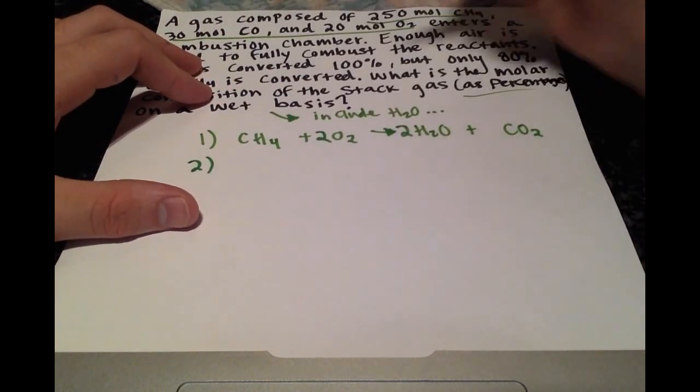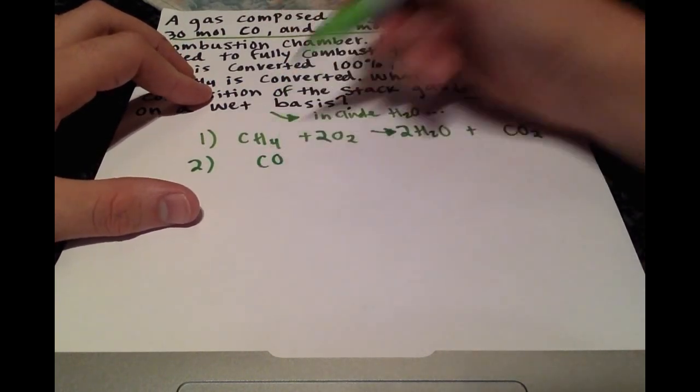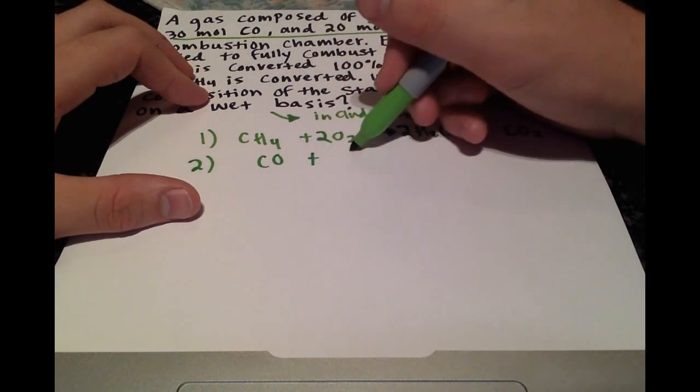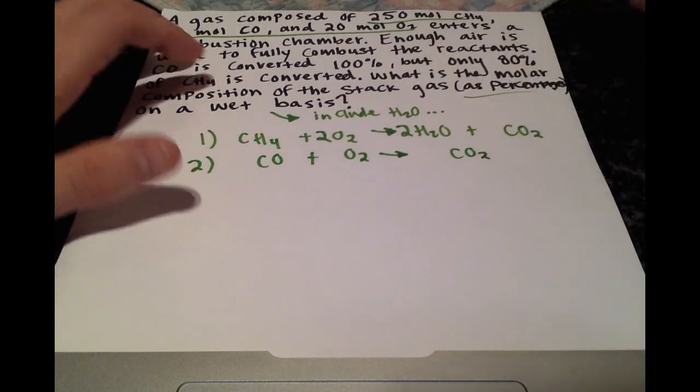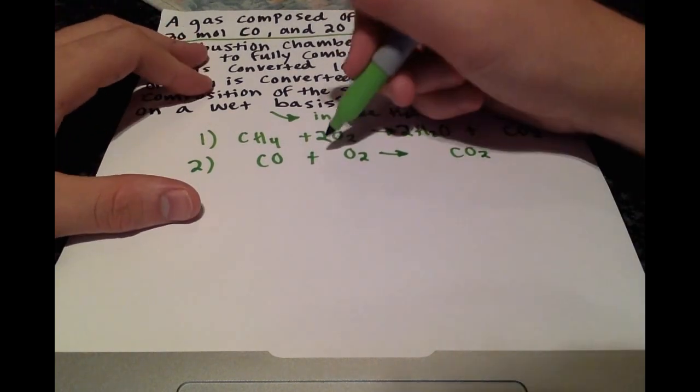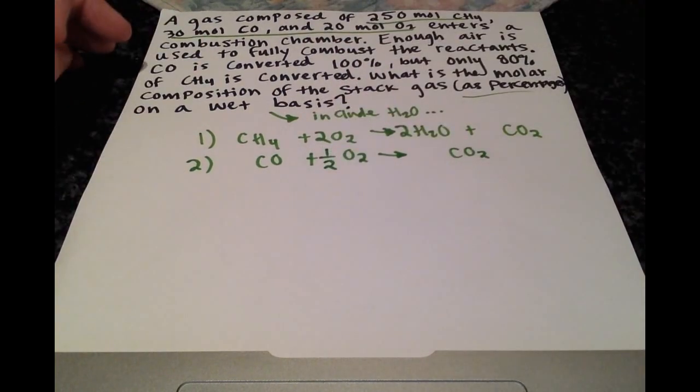Our second reaction is the combustion of carbon monoxide. So that's carbon monoxide plus oxygen gives CO2. You can see here that we have to put a one half and that will balance this out.